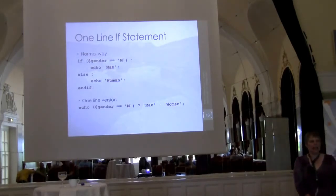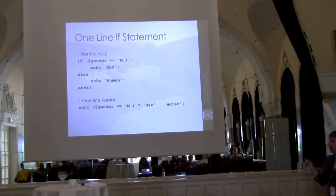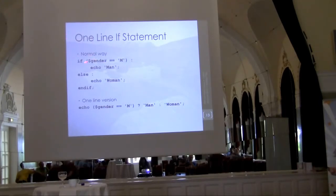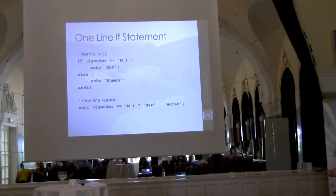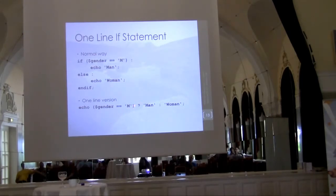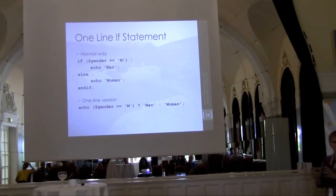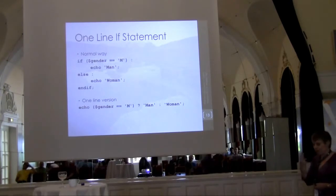There's also a one-line if statement — a ternary operator. The normal way: if($gender == 'M') then it's a man, else it's a woman. The one-line version: echo ($gender == 'M') ? 'man' : 'woman'. The condition goes first, then a question mark, then the true result, then a colon, then the false result. You'll see this a lot in layouts for quick yes/no decisions.